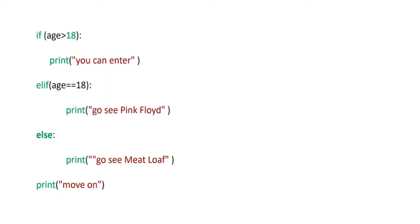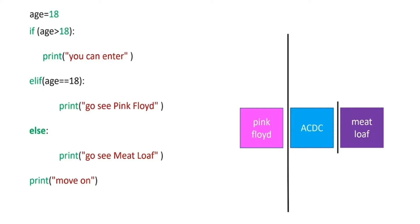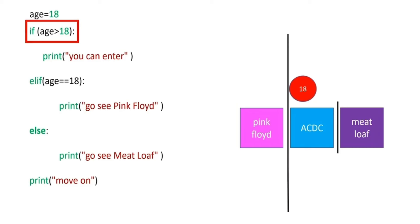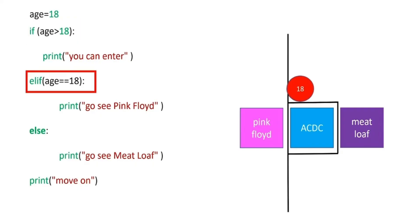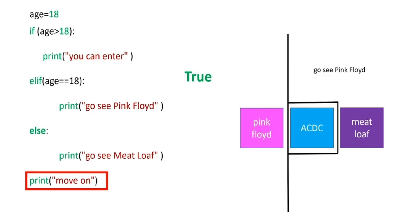The syntax of the elif statement is similar. We simply add the statement elif with the condition, then add the expression we would like to execute if the statement is true, with an indent. An 18-year-old enters — they are not older than 18 years of age, therefore the condition is false. So the condition of the elif statement is checked. The condition is true, so then we would print 'go see Pink Floyd', then move on as before. If the variable age was 17, the statement 'go see meatloaf' would print. Similarly, if the age was greater than 18, the statement 'you can enter' would print. Check the labs for more examples.